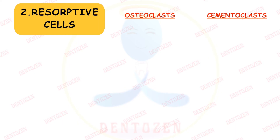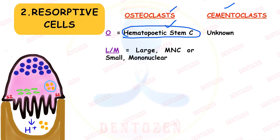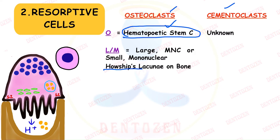For resorptive cells, fibroblasts handle fibers, but bone and cementum have different resorptive cells — osteoclasts and cementoclasts. Osteoclasts are derived from hematopoietic stem cells from the bone marrow. Cementoclasts' origin is unknown but they are thought to be similar to osteoclasts. On light microscopy, osteoclasts appear as large multinucleated cells or sometimes small mononuclear cells.